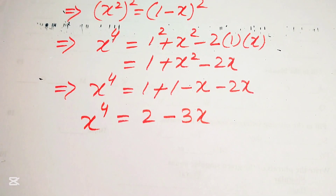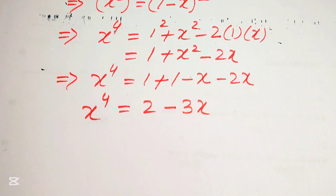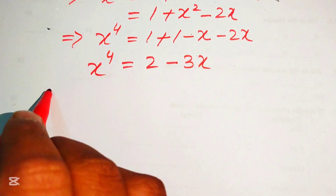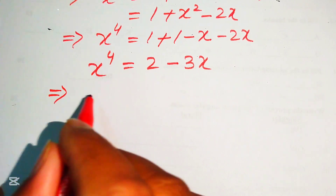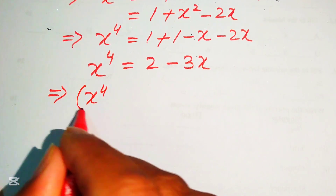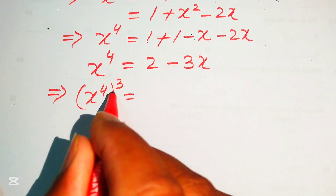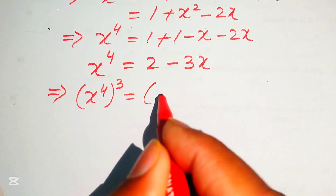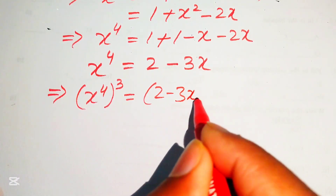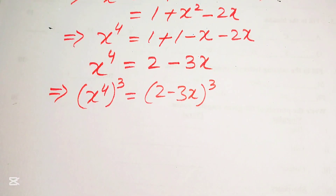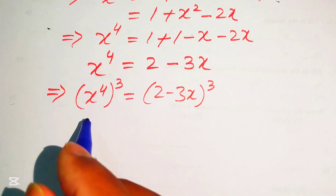Since we need x¹², we cube both sides of x⁴ = 2 − 3x: (x⁴)³ = (2 − 3x)³, giving x¹² = (2 − 3x)³.